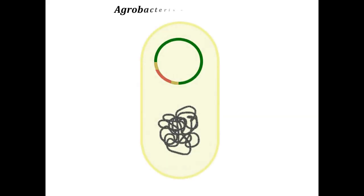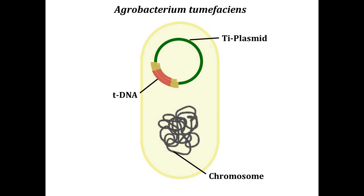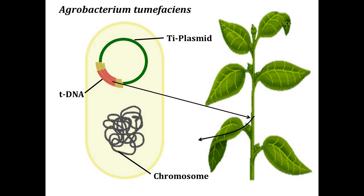The bacterium agrobacterium tumefaciens is a natural genetic engineer of a wide variety of plants. The bacterium has a loop of DNA called a tumor-inducing or Ti plasmid, and can transfer a part of this plasmid into a plant cell. The DNA transferred induces plant cells to make food molecules for the bacterium by uncontrolled cell division.